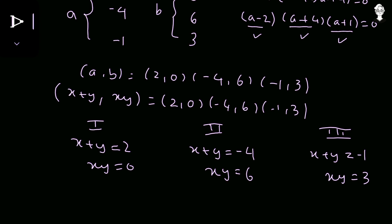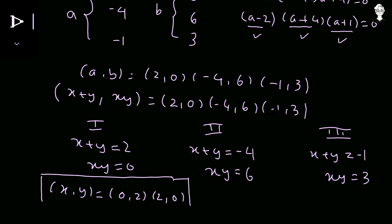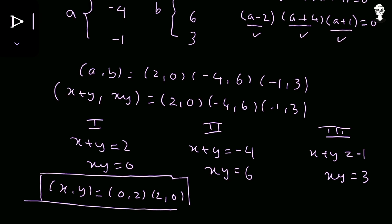Case 1 is easy to solve: x + y = 2 and xy = 0. Since xy = 0, one of x or y is zero. Therefore the solution is (x, y) = (0, 2) or (2, 0). These are real values, so this case gives valid solutions.